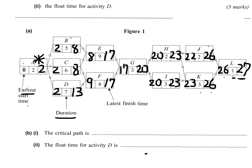C, 2 plus 6 is 8. No leeway. So C is a critical activity.